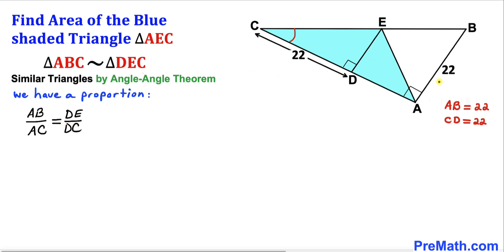Once again, AB divided by this whole AC equals DE divided by DC. Now we know that AB length is 22 units and DC length is 22 units as well.